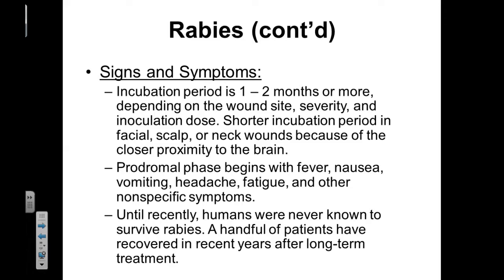Some of the signs and symptoms of rabies include first that long incubation period of one to two months. So after the patient is infected or inoculated with the virus, depending on the severity of the bite and the initial dose of the virus, it can take up to two months for the patient to start to manifest symptoms. The prodromal phase will start with some fever, some muscle aches, some nausea, headache and fatigue, and some other general malaise — you just feel terrible.